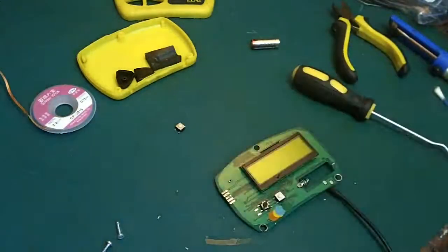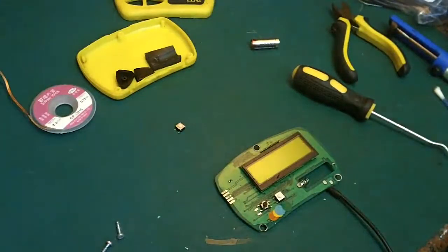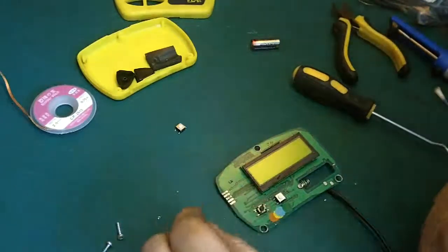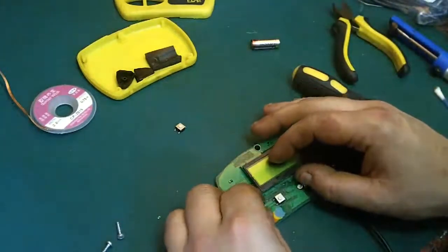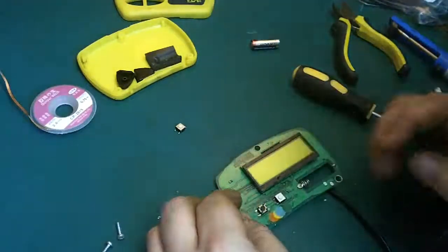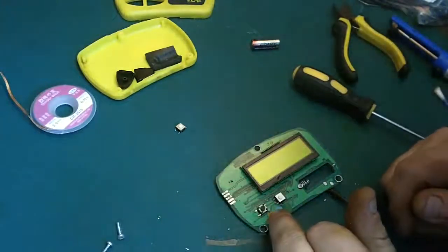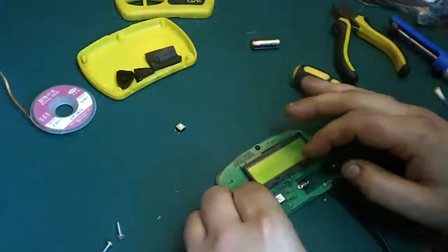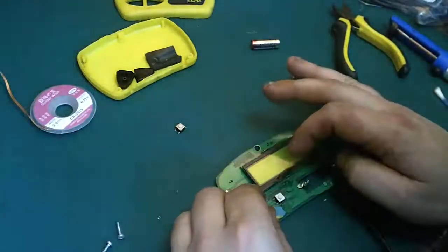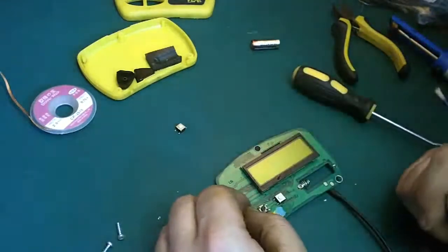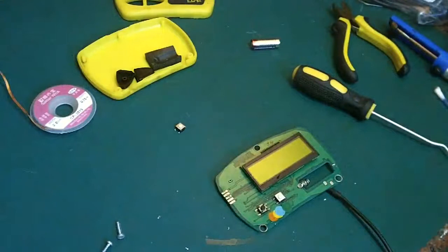Because we have our nice new - we have our nice salvaged switch there - we can put that in position. Make sure it's going to actually line up, which I think it will do. Yes, that's going to line up, okay. The new legs, obviously because they aren't really designed for surface mount, are a little bit bigger than the old ones, but it's not going to matter. They're still going to touch where they're meant to touch, so that's all that's really important.